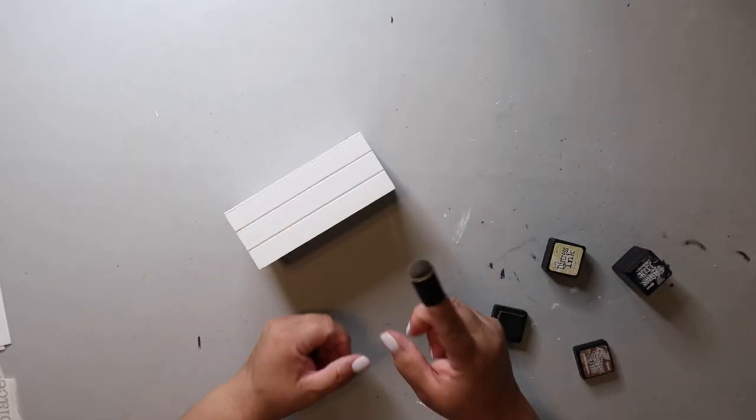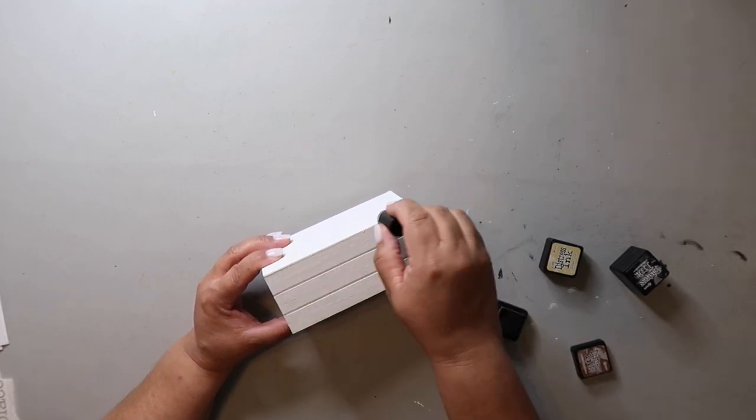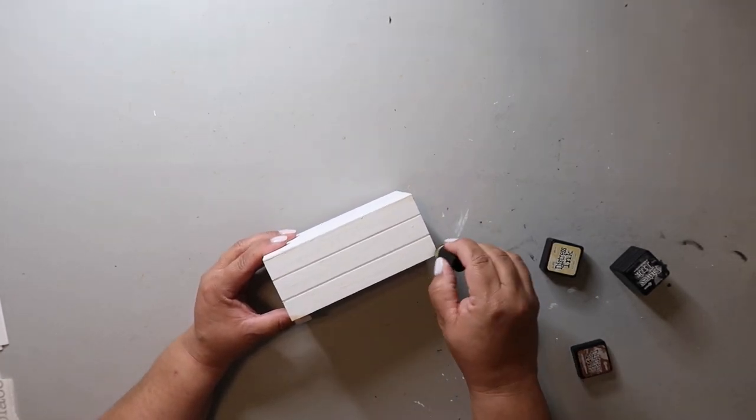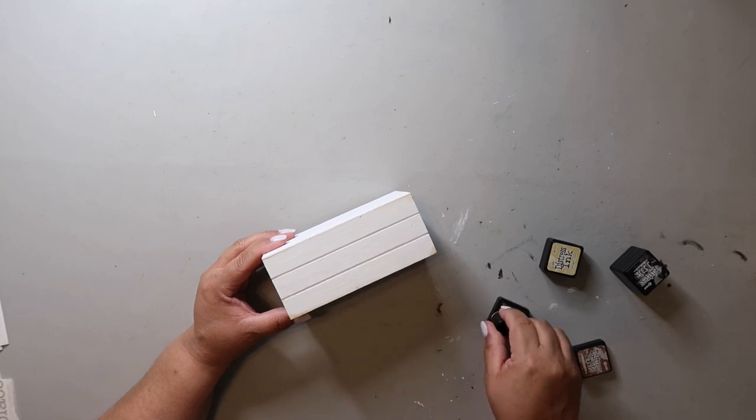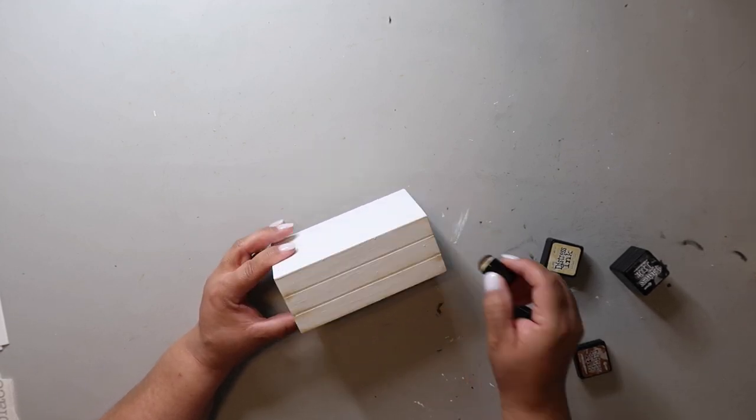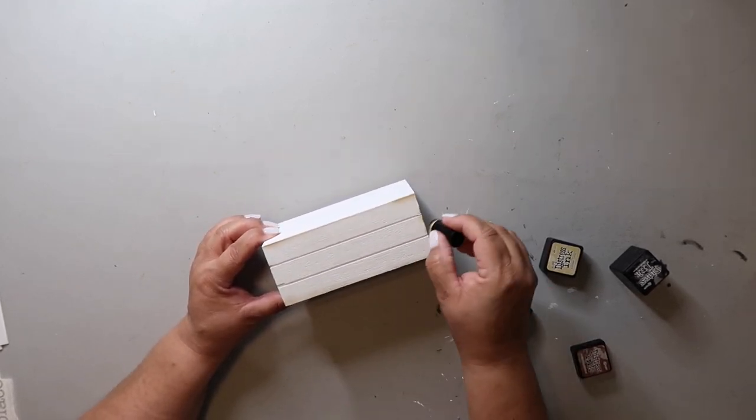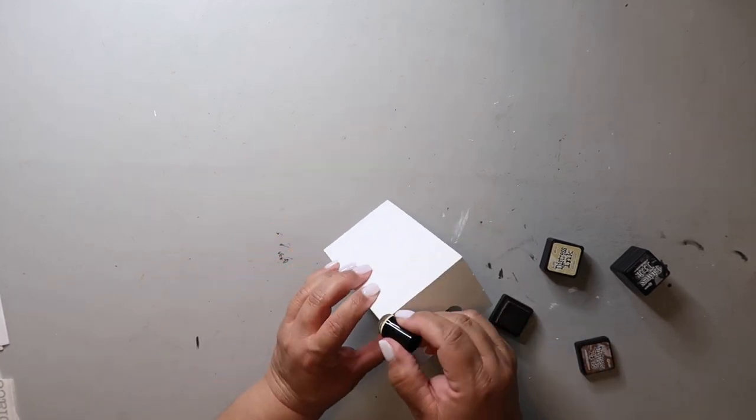I then took some Tim Holtz distressing ink to give this piece some character, and I'm applying it with this little sponge dauber thing that I got from Hobby Lobby. You could use a paintbrush or really even a paper towel for this part. I'm just trying not to overdo it with the distressing, mostly focusing on the edges and the corners, like where you would normally see wear.